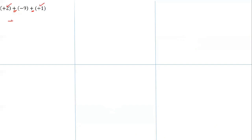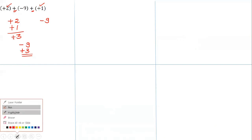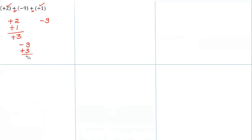Group the numbers having the same sign. Plus 2 and plus 1 have the same sign — add them: plus 3. The number having a negative sign is only minus 9. So now we have minus 9 plus 3. We have to subtract because the numbers have different signs. Subtract 3 from 9: 9 minus 3 is 6. Put the sign of the bigger number — minus 6.